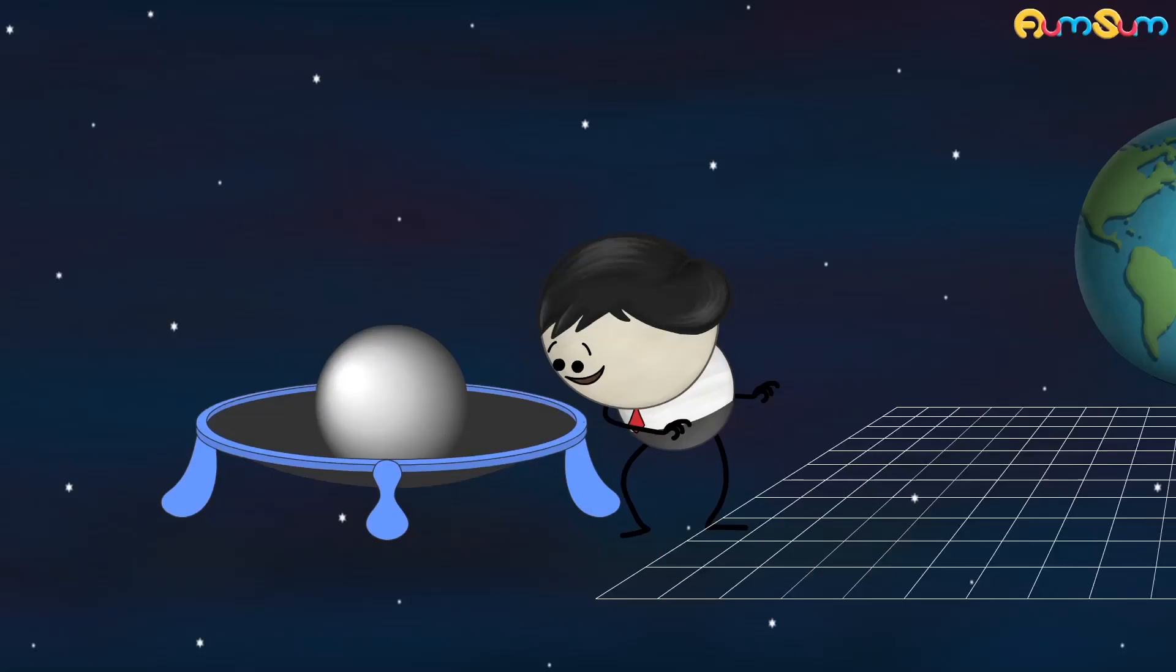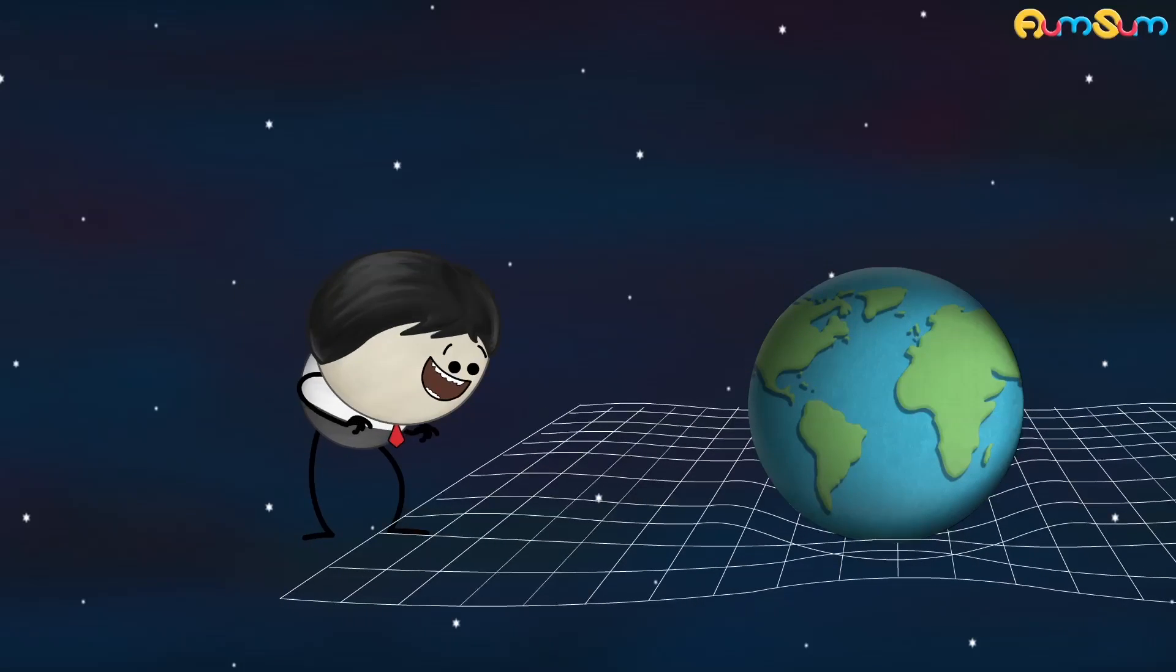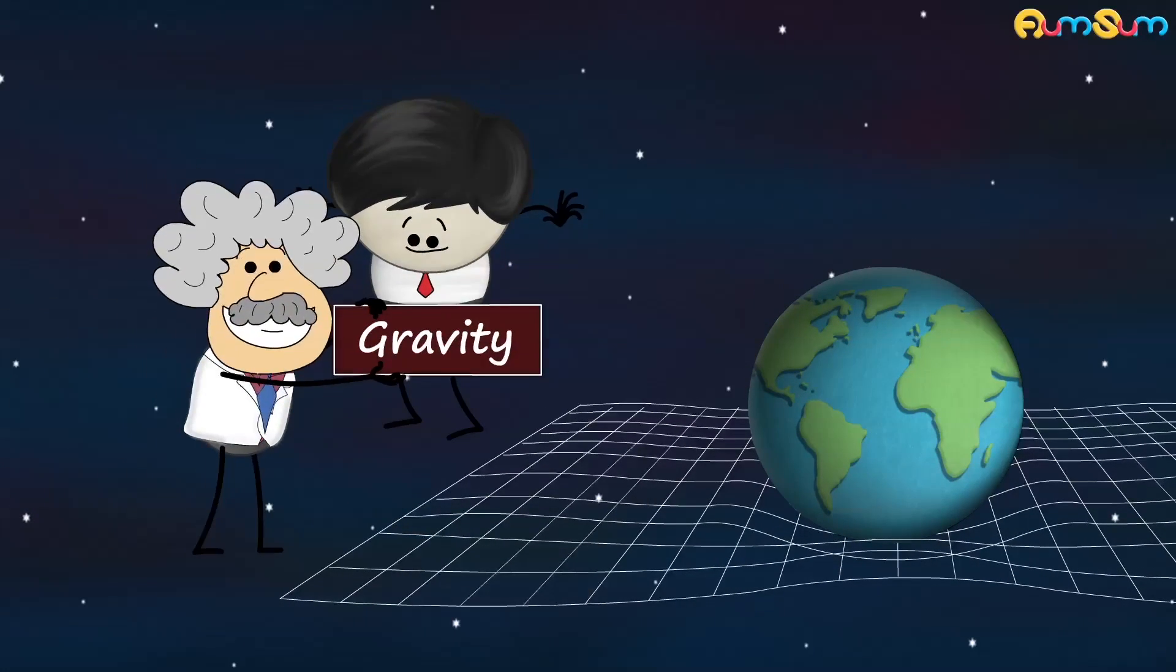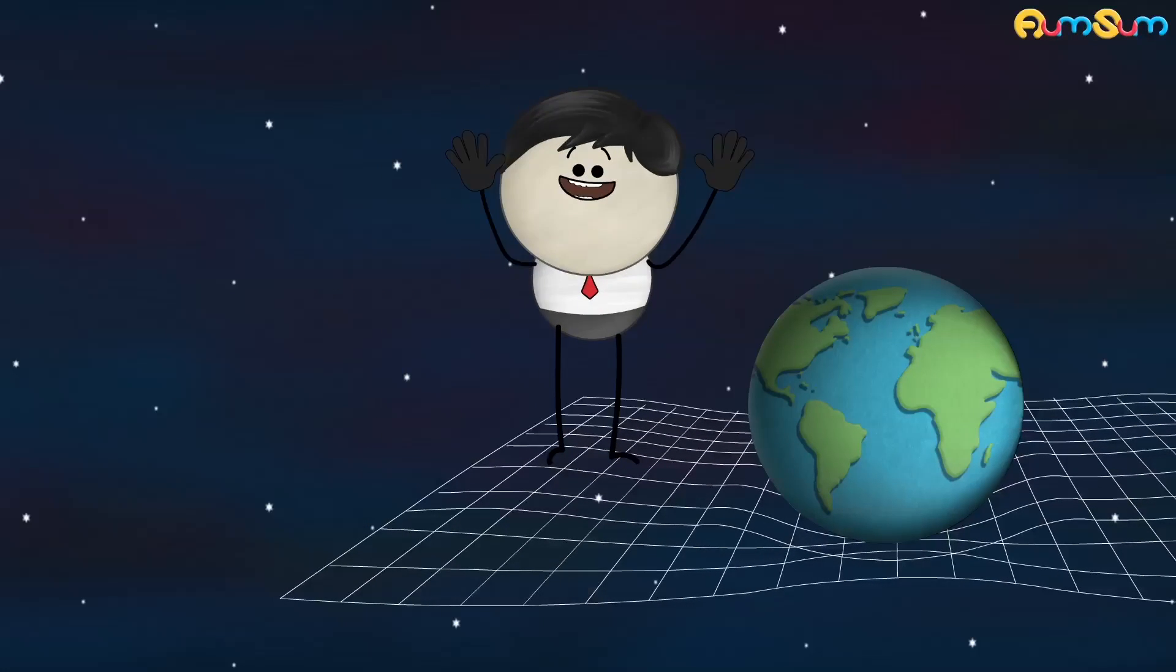Now, just like a heavy ball creates a curve or distorts the trampoline, mass of an object creates a curve in space-time. According to Einstein, this curve is gravity. Wow. This trampoline is amazing.